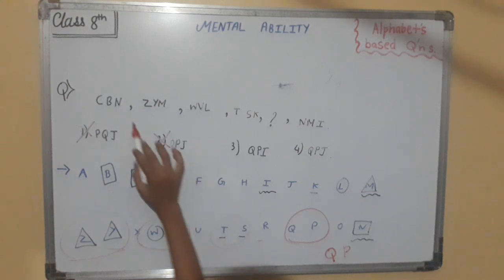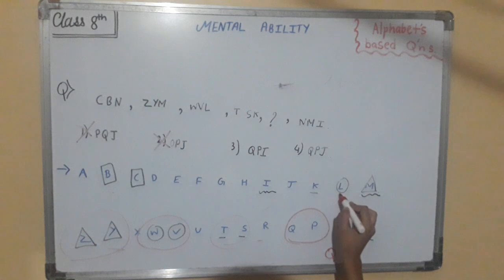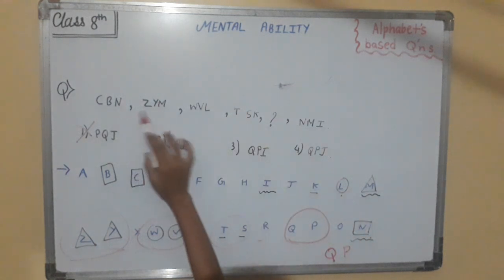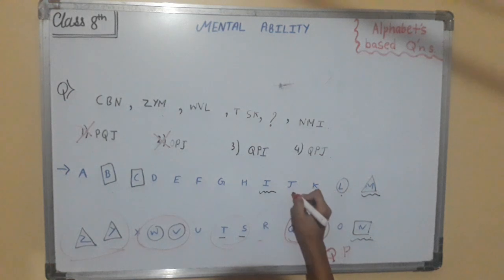Next, we can see the last letter is N, then M, then L, then K. So we have to find the next number. So it will be after K, that is J. Q, P, J. And after that I is the next number. So our right answer is option number 4, Q, P, J. I hope you have understood this question.